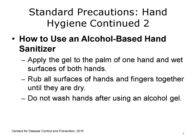To perform proper hand hygiene using an alcohol-based hand sanitizer rub or gel: Apply the gel to the palm of one hand. Use enough of the product to wet all surfaces of both hands. Rub hands together until they are dry, being sure to rub over all surfaces of both hands and fingers. Do not wash hands after using an alcohol gel — this step is not necessary or recommended.